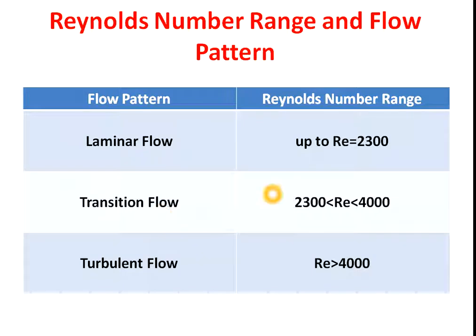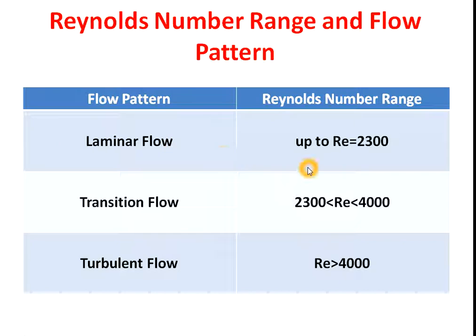Now let's see the Reynolds number values for each type of flow pattern. If the Reynolds number is between 0 and 2300, the flow is laminar. If the Reynolds number is between 2300 and 4000, the flow is transitional. If the Reynolds number is greater than 4000, the flow is turbulent.